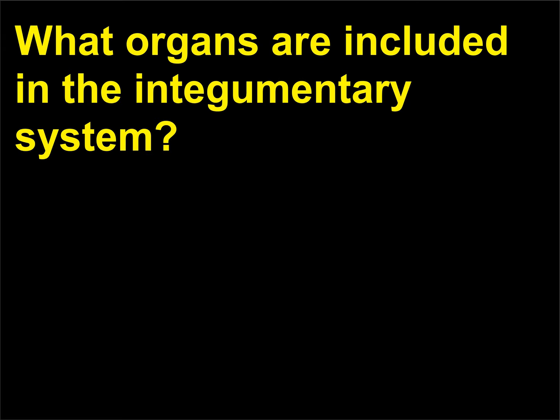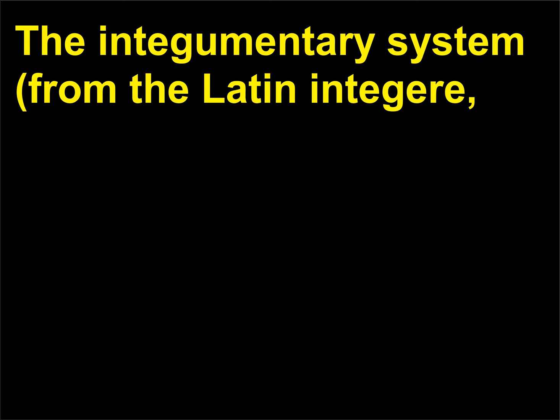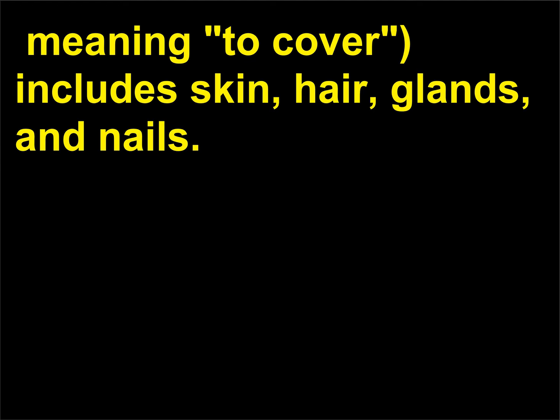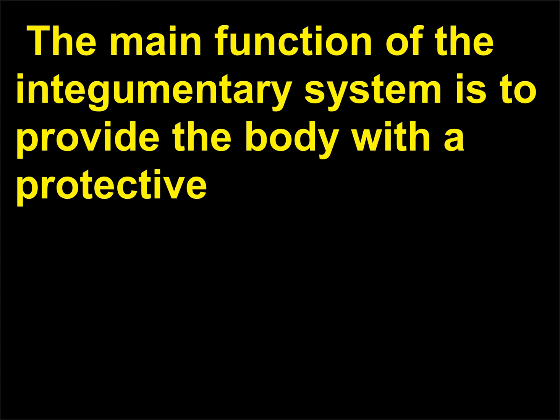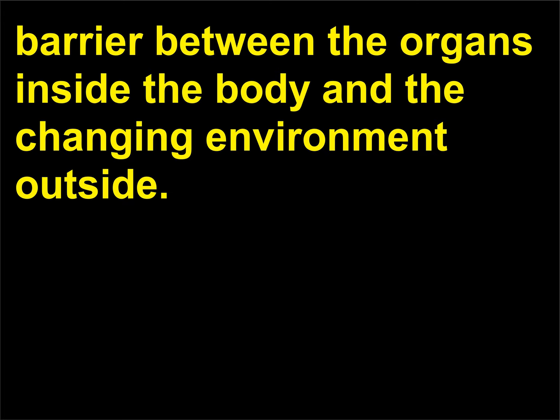What organs are included in the integumentary system? The main function of the integumentary system is to provide the body with a protective barrier between the organs inside the body and the changing environment outside.